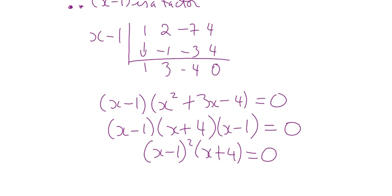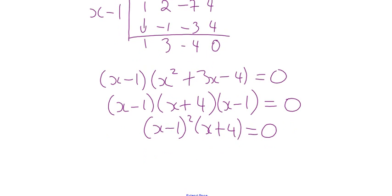Which is really x minus 1 quantity squared and x plus 4. The solution is x equals 1 or x equals negative 4. So, only two solutions. If we're going to graph that, we know we have a root of multiplicity 2 and a positive leading coefficient, right? So we're going to cut through negative 4 and then bounce off of the 1.